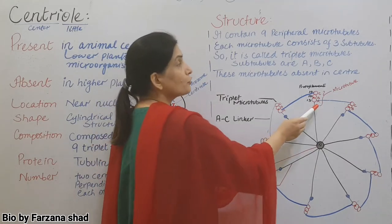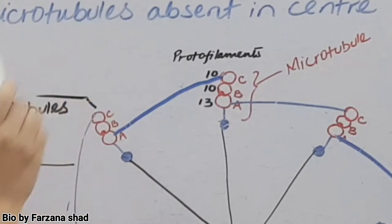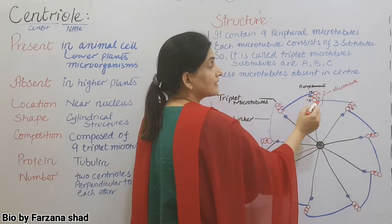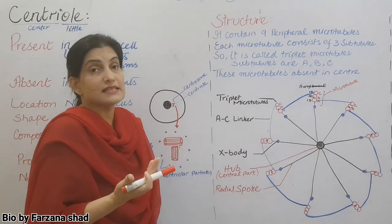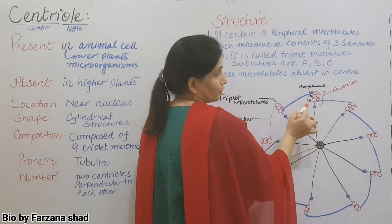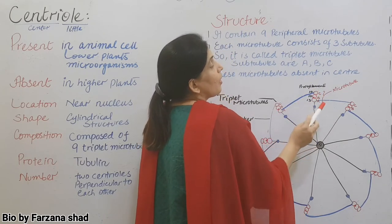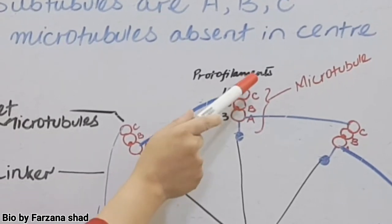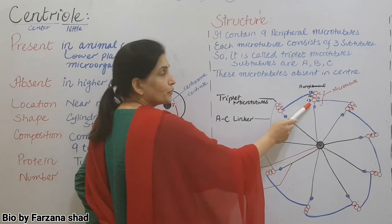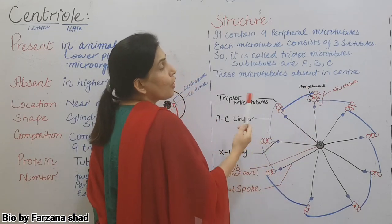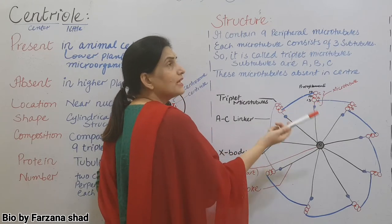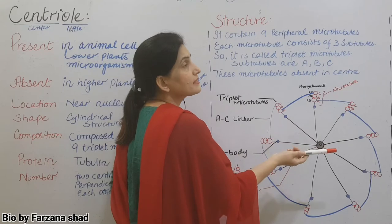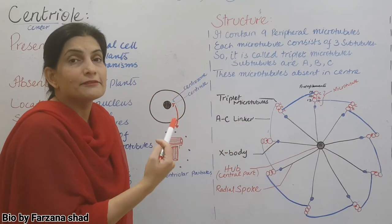Then you see here that each microtubule consists of further three tubules, for which we use the term subtubules. One microtubule consists of three subtubules. So we can say this is the triplet microtubule. And the triplet microtubule has three subtubules inside. Which subtubules are these? A, B and C. A, B and C are the subtubules. These three together form what? The microtubule. And inside them, definitely when these are microtubules, the protein present is tubulin protein. A has 13 protofilaments inside. Protofilaments are made of alpha and beta tubulin.